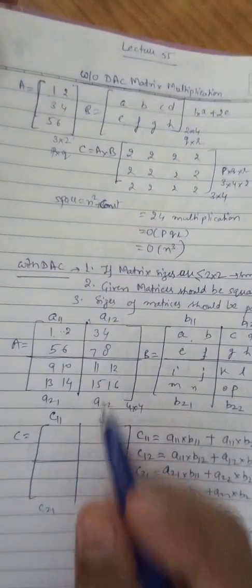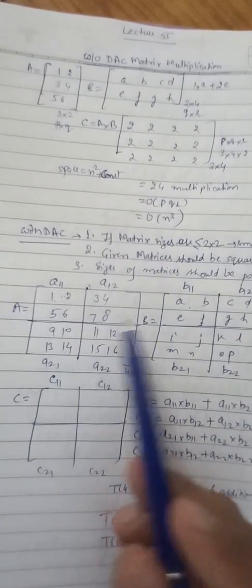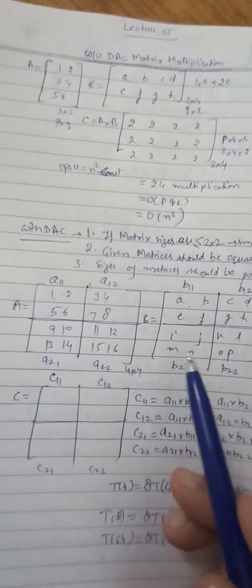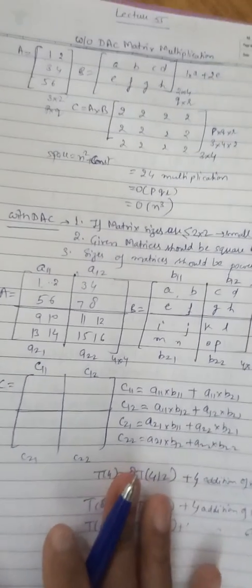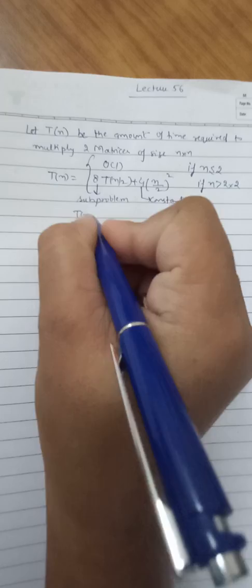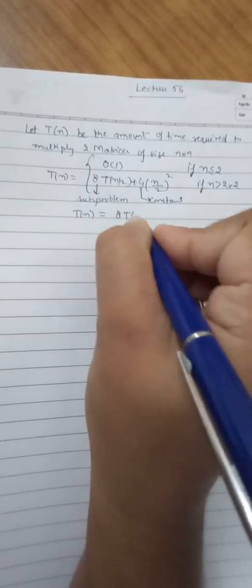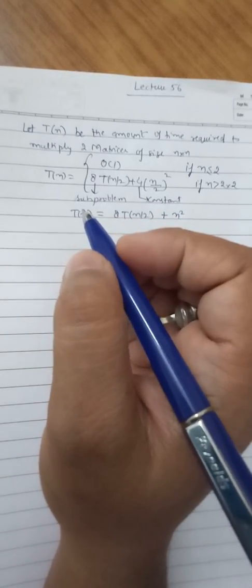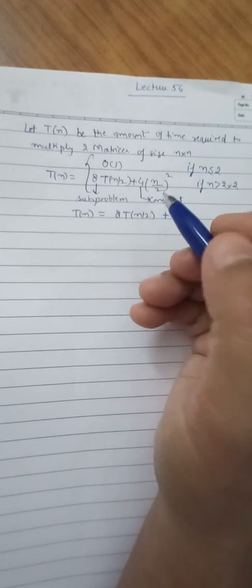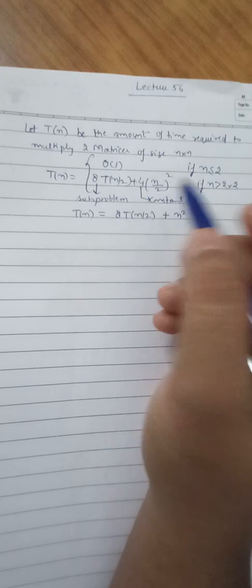From the last lecture, we divided the entire matrix into 8 sub-problems because we individually divided into 4 and 4, giving 8 total. Every time we multiply, we perform 4 additions. So we can simplify the recurrence: T(n) = 8T(n/2) + n², because we neglect the cost of addition relative to multiplication, and the constant 4 is absorbed.